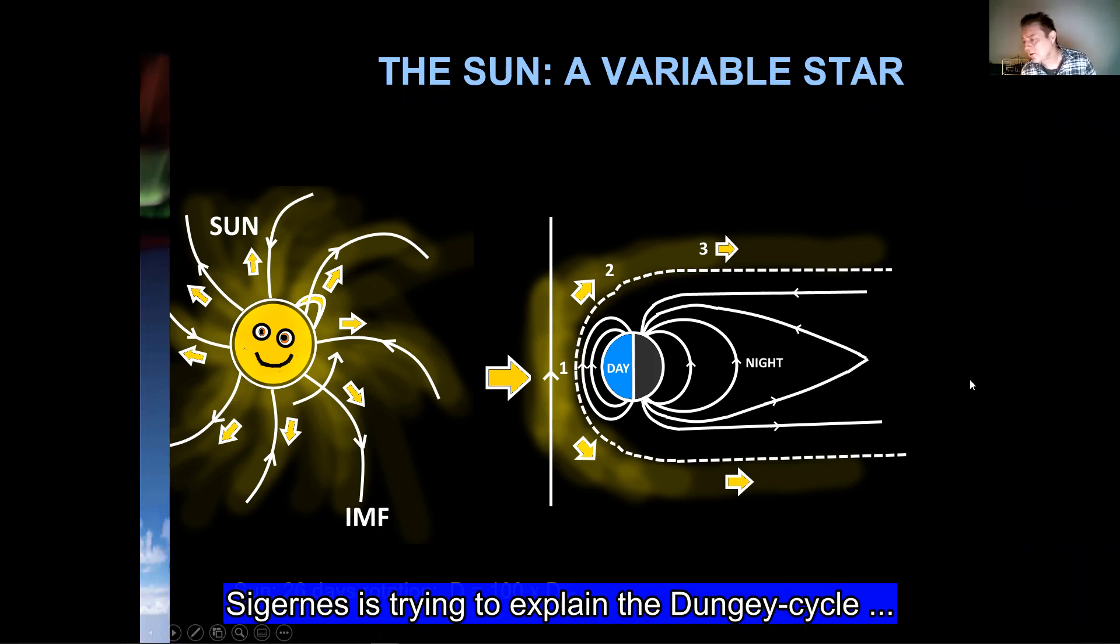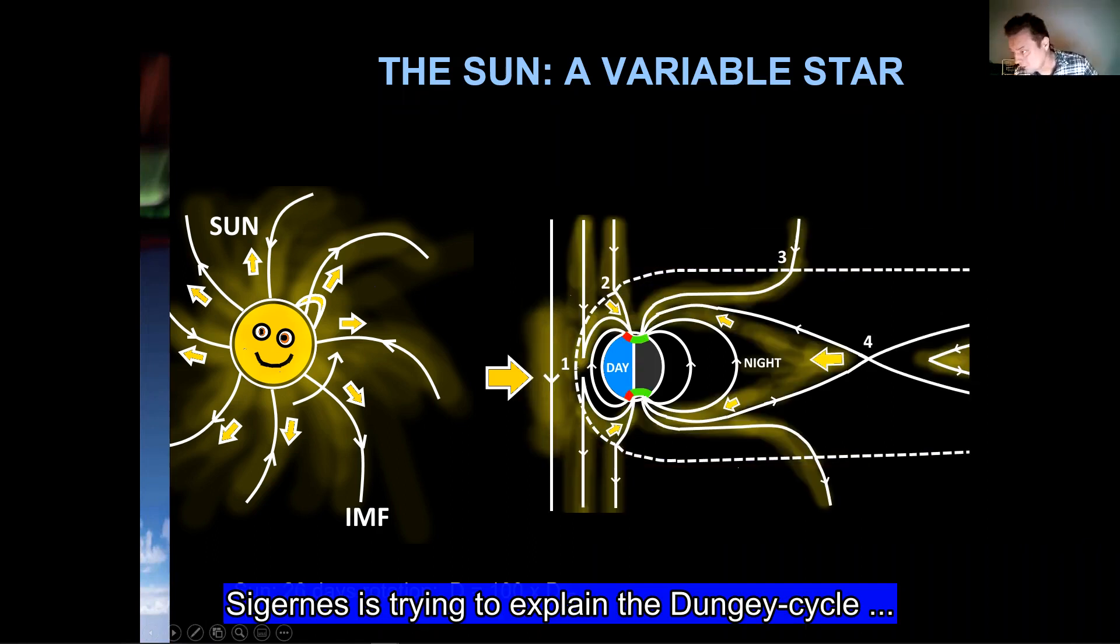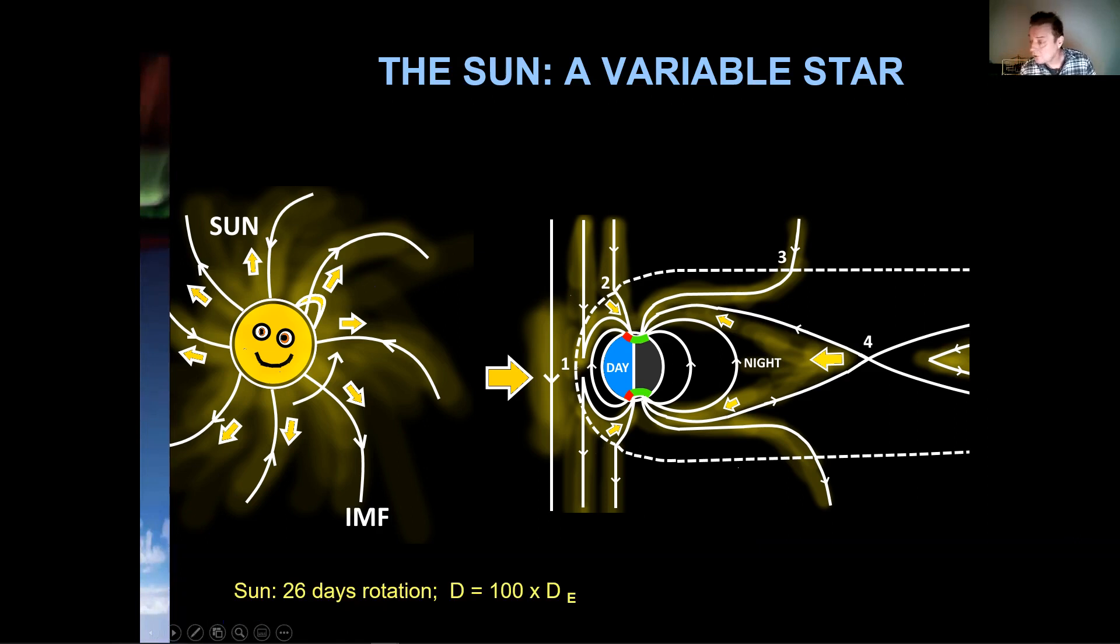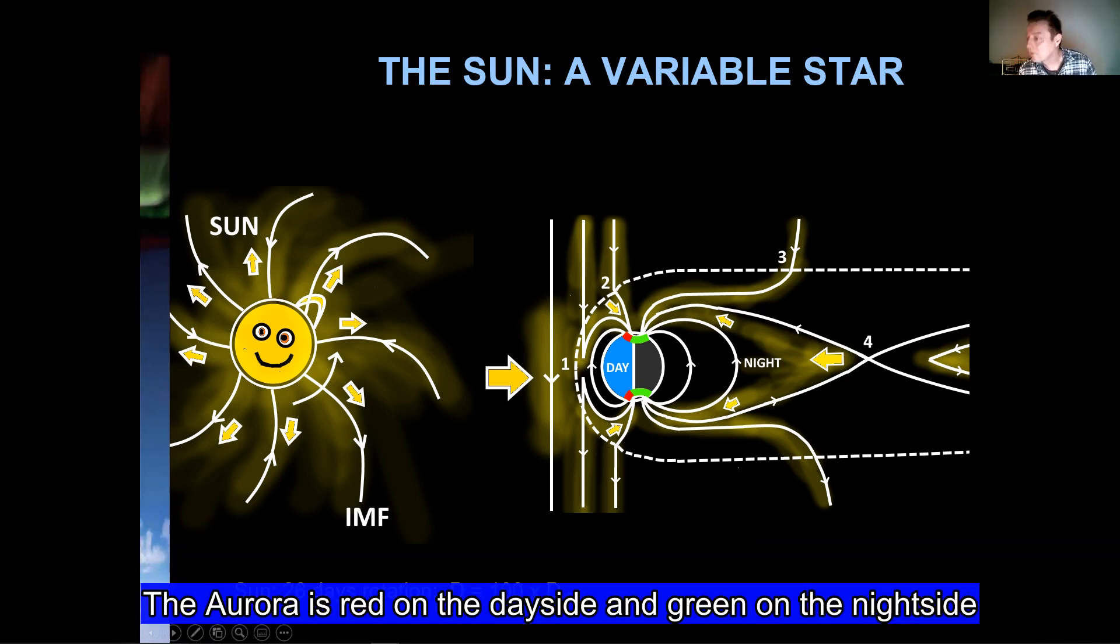If the magnetic field of the solar wind is pointing downwards, then everything opens up. Then you get the reconnection between the magnetic field lines on the day side. And solar plasma is allowed to enter these magnetic clefts forming day side aurora here on the day side. And on the night side, the solar wind is dragged into the tail and then it reconnects again over here and are shot back with high energy forming night side aurora on the night side of Earth.